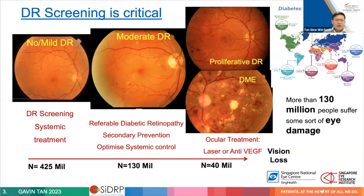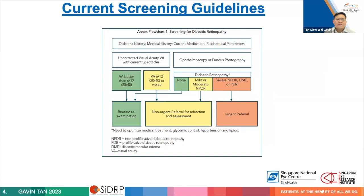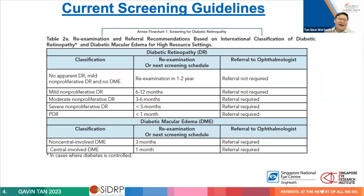There are screening guidelines that suggest when screening is useful, and there is a difference between high-resource settings like Singapore and low- or middle-income countries. More frequent screening picks up more disease, but you can't afford that frequency everywhere — or manage the overwhelming referrals. So by reducing frequency you take on some risk of missing disease, but you can provide better quality care for those you do screen.